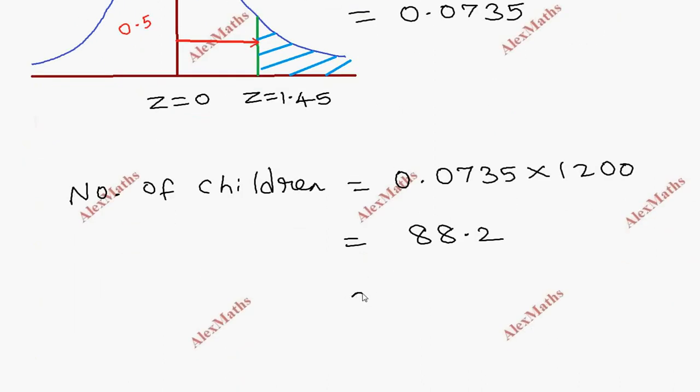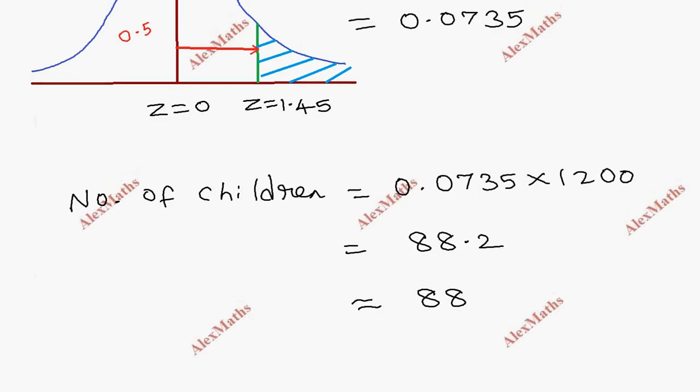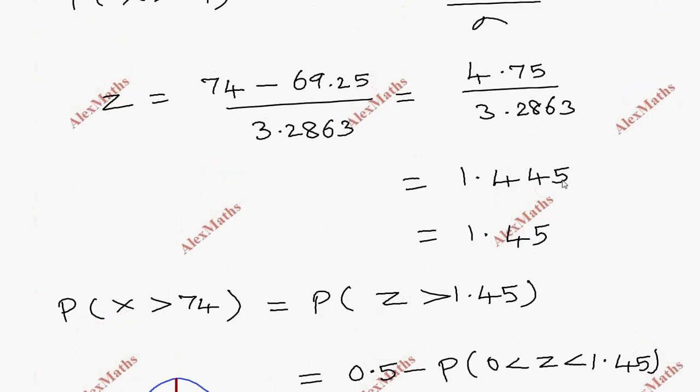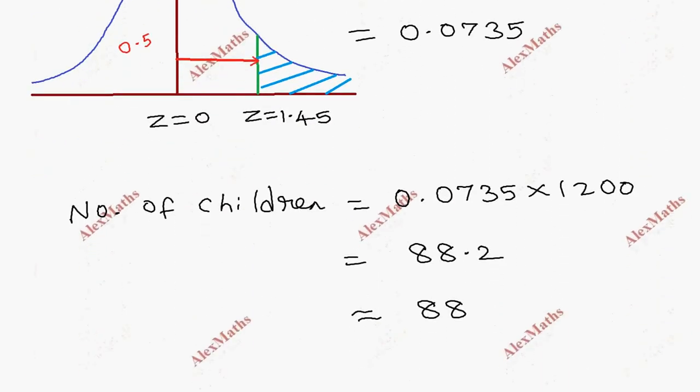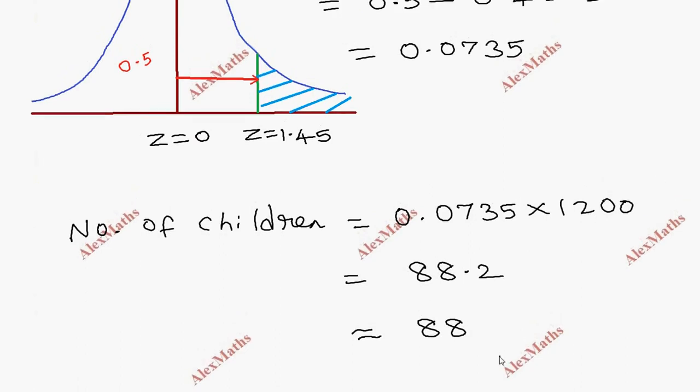So approximately 88 children. We round 88.2 to 88.